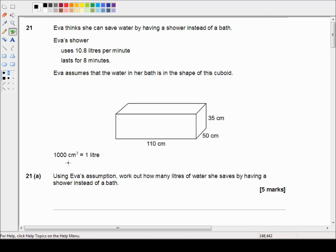We're told that 1000 centimeters cubed is equal to 1 liter. Question 21a says, using Eva's assumption, work out how many liters of water she saves by having a shower instead of a bath. Okay then, so let's have a look.